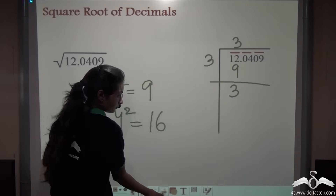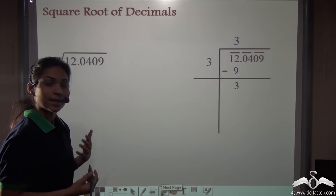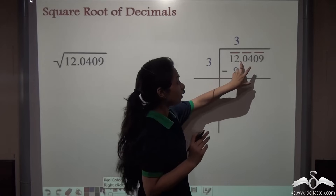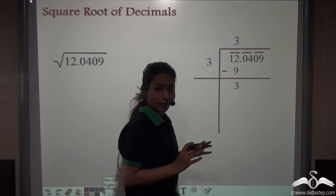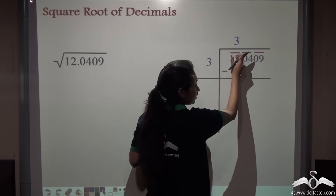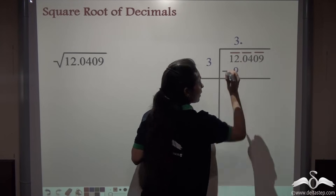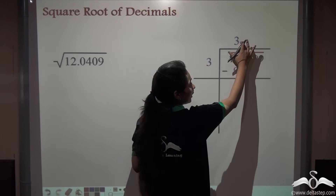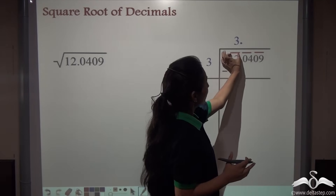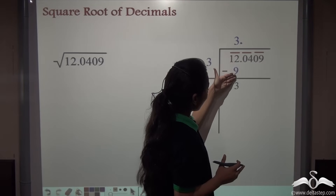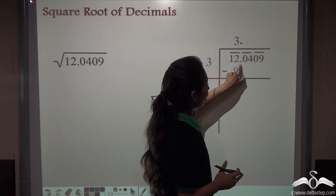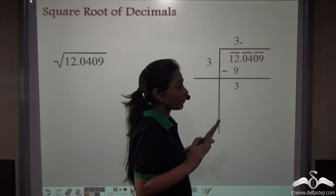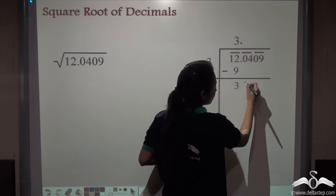Subtract: twelve minus nine gives us three. Next, we copy the next pair of digits. But here we have a decimal point in between — so whenever we finish with the digits before the decimal point, just put this decimal point in the quotient as well, and your decimal problem is over. You don't need to care about the decimal anymore once you've put it in the quotient. So finish off with this digit: three threes are nine, you got the remainder. Now before bringing down the next pair of digits, put that point in the quotient. So copy down zero four now.